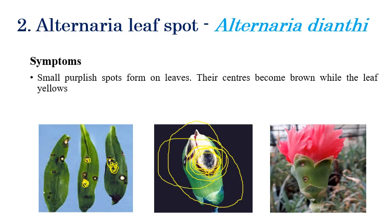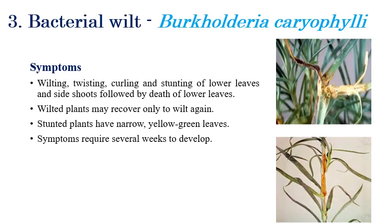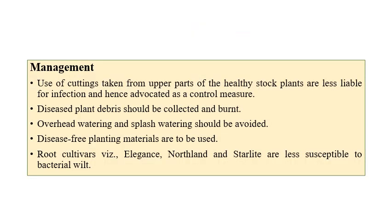The third disease is bacterial wilt, caused by Burkholderia. The symptoms include wilting, curling, twisting, and stunting of lower leaves especially. In later stages, death of lower leaves can be observed. Wilted plants may recover if proper nutrition and management practices are provided. Yellowish-green spots can also be observed in some stages, but the major symptoms are wilting, twisting, and curling of the leaves.